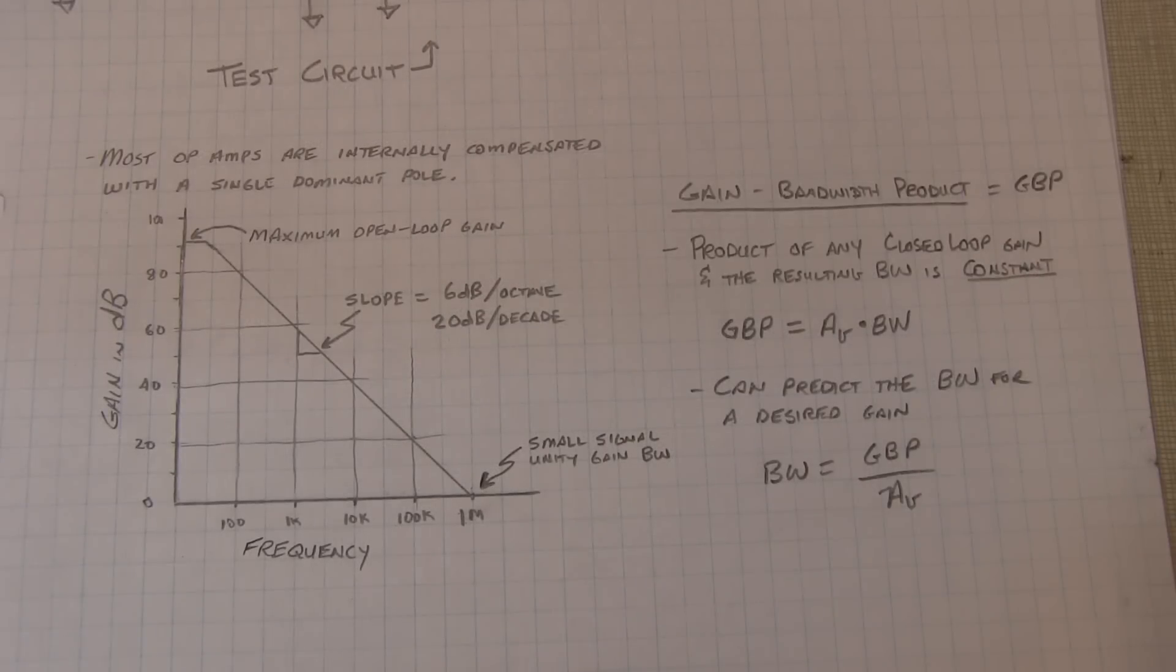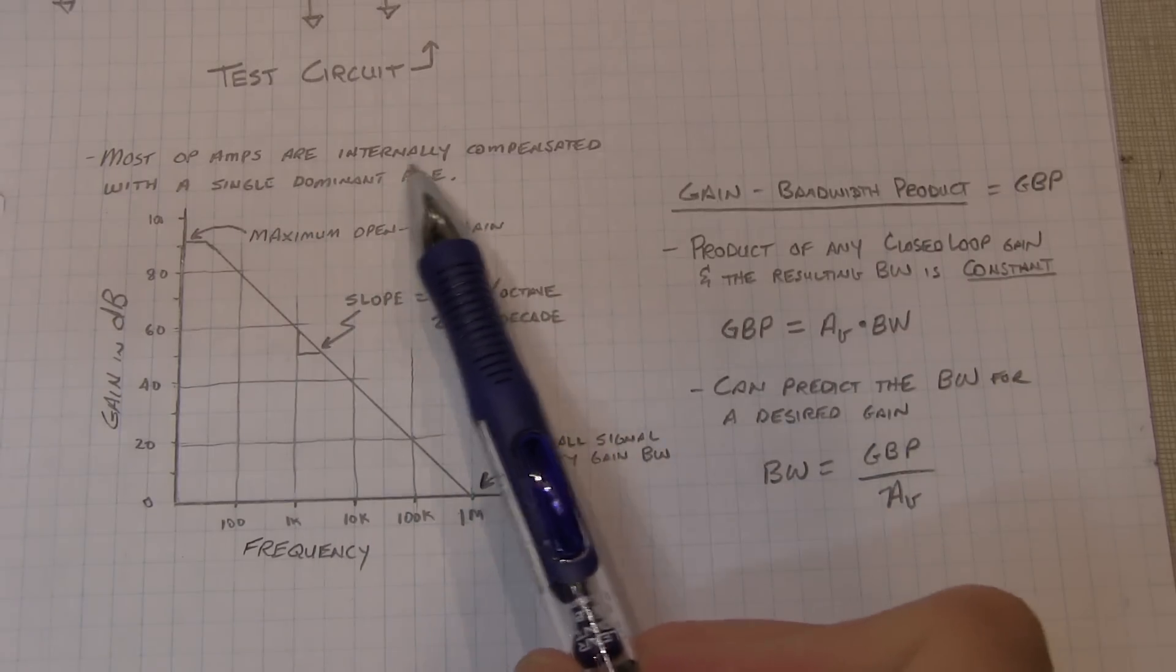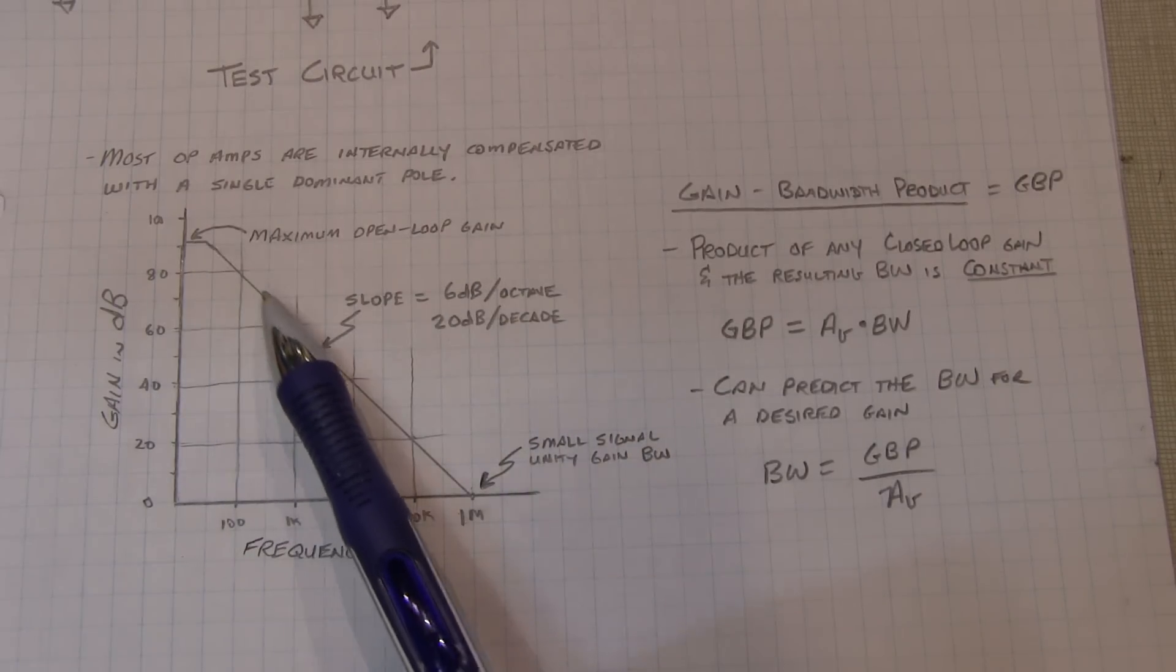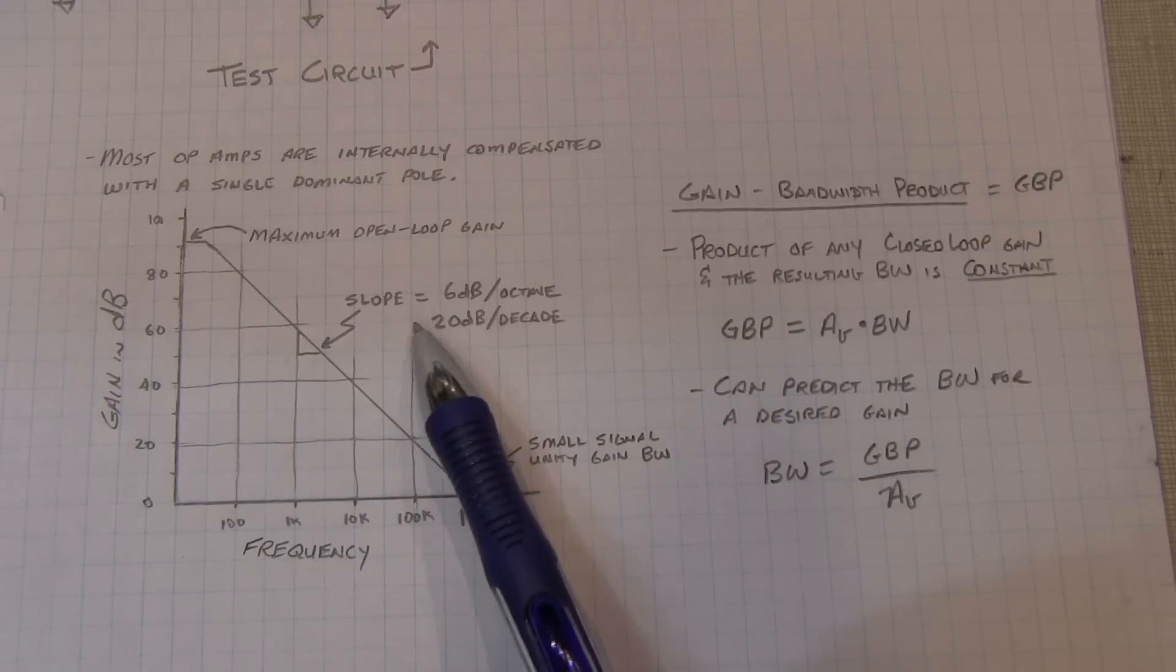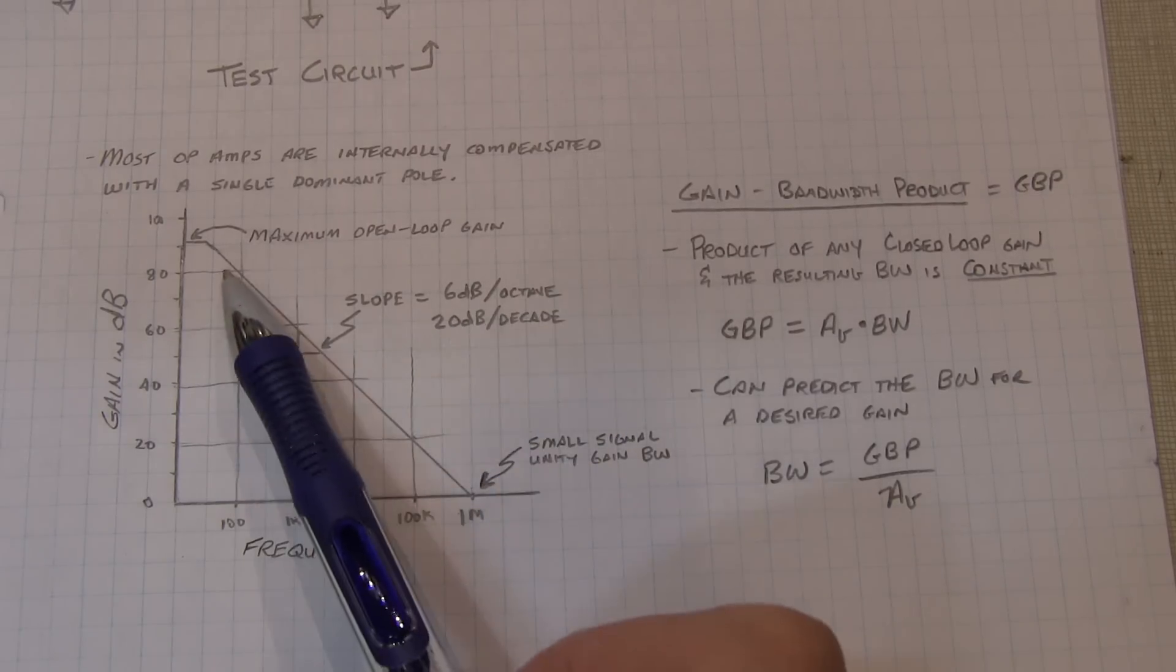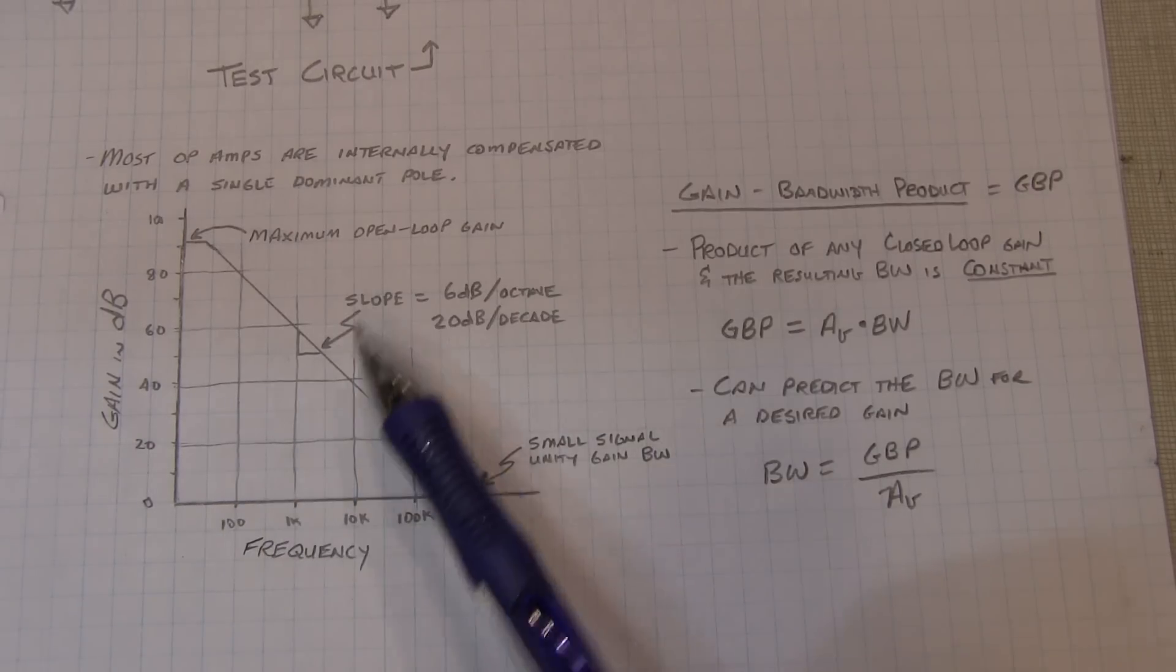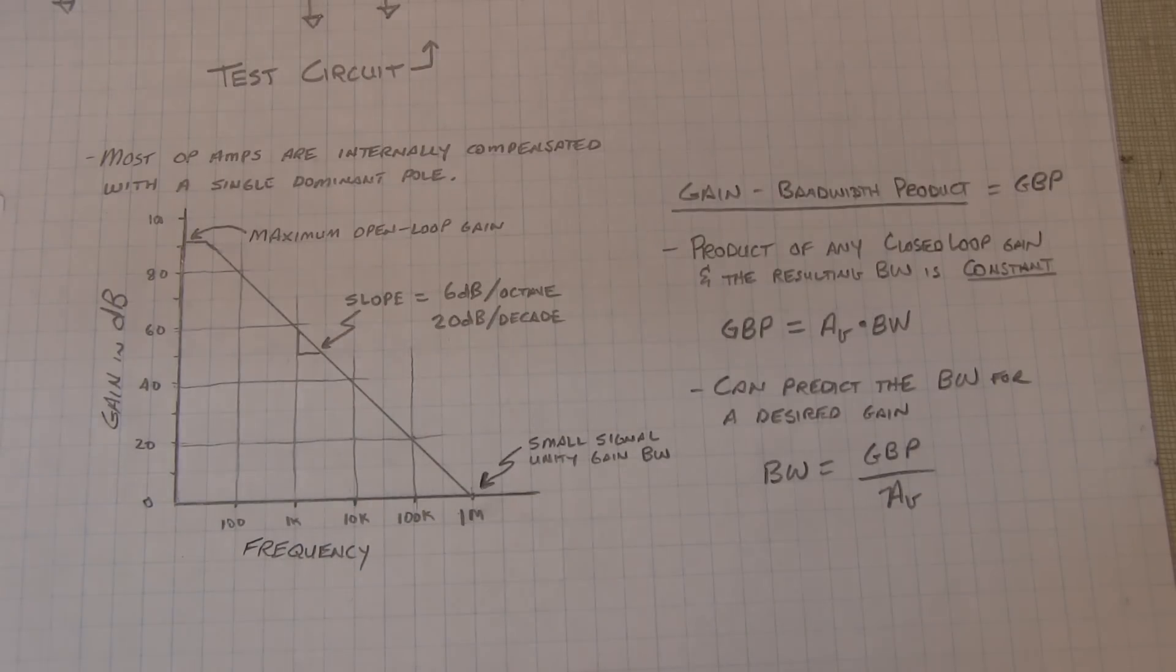This discussion will apply to the vast majority of general purpose op amps on the market because the vast majority of these op amps are internally designed to be compensated with a single dominant pole. What that means is the open loop frequency response is going to fall with this single pole response, which really means that the gain falls at a rate of 6 dB per octave change in frequency or 20 dB per decade change in frequency.